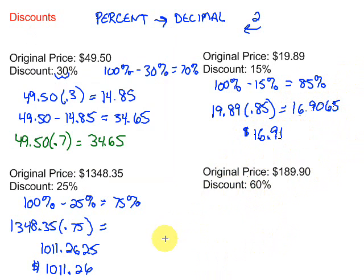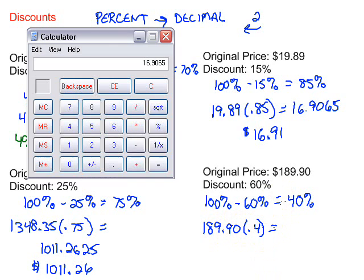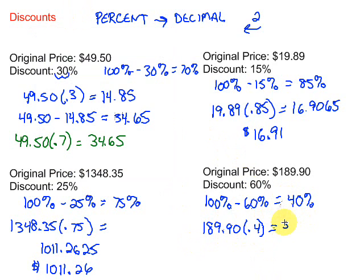All right, let's try one more here. 60% discount. So that means how many percent do we want to find? You might be able to do this in your head, but I'll write it out just because. 100% minus 60% is 40%, so we're going to pay 40% of this price. So we need to go ahead and multiply. 189.90 times 40% as a decimal is 0.4. Grab our calculator. 189.90 times 0.4, 75.96. That's how much we'll pay on this price when it's 60% off.